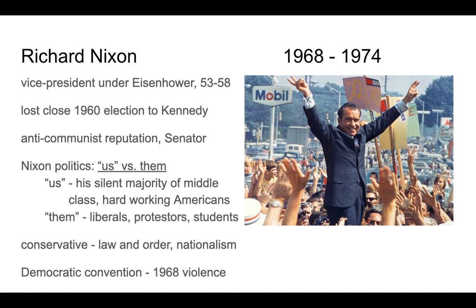Nixon set up an 'us versus them' dynamic. The 'us' were his followers — he called them the silent majority. They were middle class, blue collar, patriotic Americans who trusted their government and followed what it said regarding things like the war in Vietnam. Nixon made villains out of the other side — he called them the long hairs, the protesters, the students, the liberals, the upper class, the intellectuals. Through this us-and-them politics, American society became more divided.